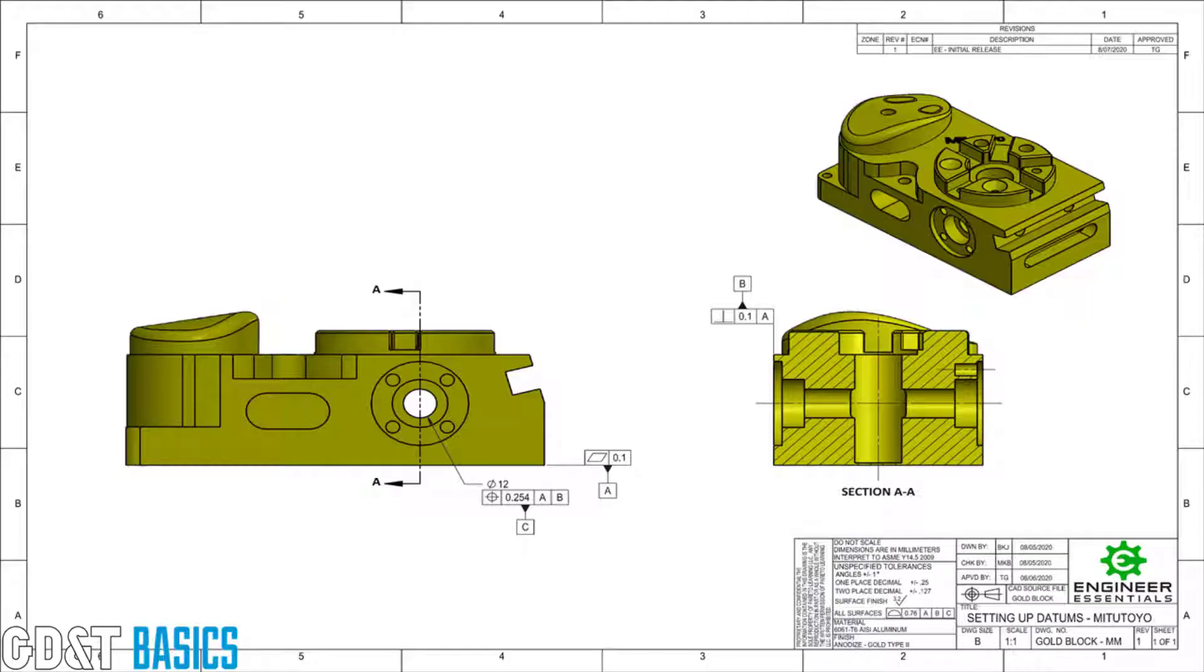This qualifier is surface flatness, which is a form control. Generally speaking, we can only use form controls to qualify a primary datum, and this is because, just like a primary datum, form controls cannot be related back to any other features on the part. Remember from our course and from our GD&T wall chart, no datum references are allowed when it comes to form controls.